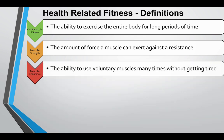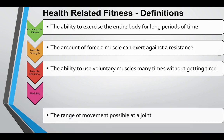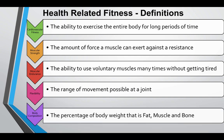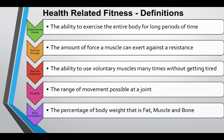Muscular endurance is the ability to use voluntary muscles many times without getting tired. Flexibility is the range of movement possible at a joint. Body composition is the percentage of body weight that is fat, muscle, or bone.